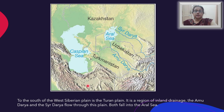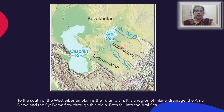To the south of the West Siberian Plain we have the Turan Plain. This is a region of inland drainage. The Amudarya and the Sirdarya flow through this plain and both fall into the Aral Sea. Both these rivers form the Turan Plain and are known for being an inland drainage system, lying to the south of the West Siberian Plain.